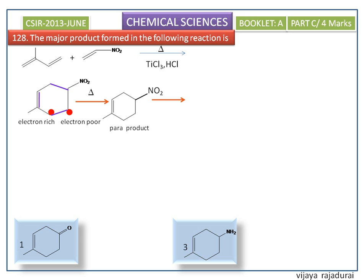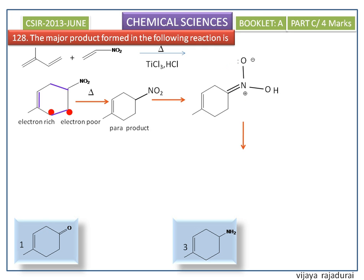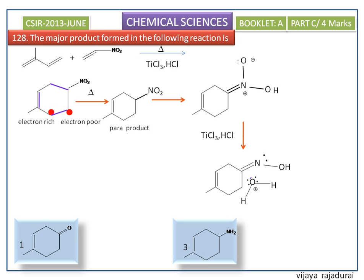The nitronate product is tautomerized into its nitronate form. Further, adding titanium trichloride (TiCl3) in acidic medium facilitates the reductive hydrolysis to complete the conversion. Titanium has a strong affinity towards oxygen, which reduces the N-O bond. Finally, we get the product.